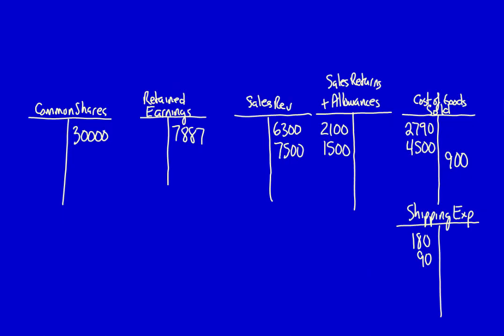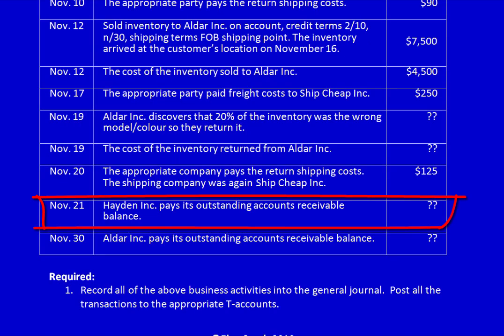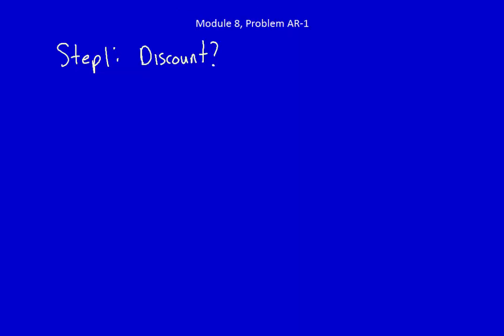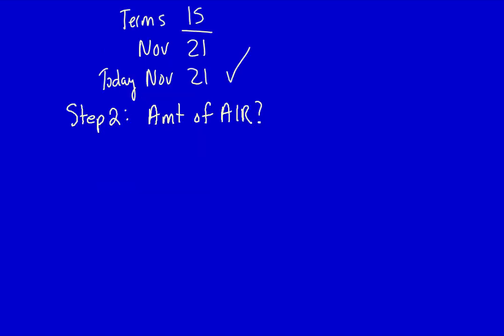What did they give away? Cash — $125. T-accounts: debit shipping expense $125, credit cash $125. Next entry: November 21st, Hayden Inc pays the outstanding accounts receivable balance. Three-step process. Step 1: does Hayden get to take the discount? When did ownership transfer? November 6th. What were the credit terms? 1/15 net 30, so Hayden had until November 21st to take the discount.